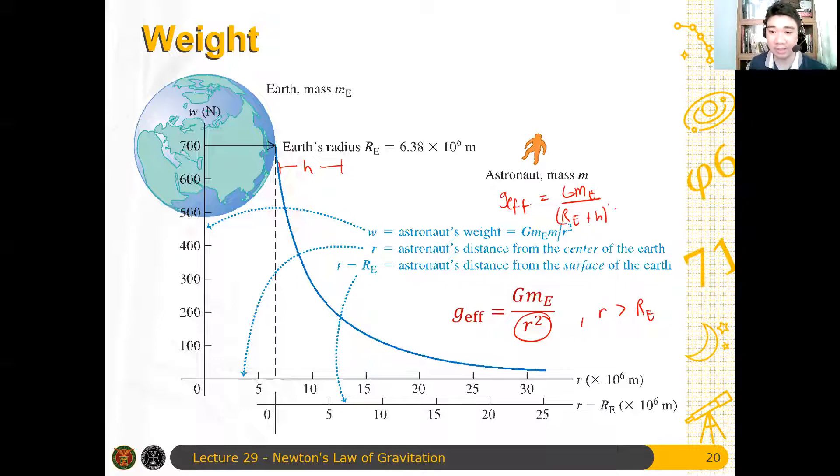then the effective gravitational force is not Gm over h squared, but rather Gm all over the radius of the Earth plus height quantity squared. Kasi nga, dapat from the center ang calculation, not from the surface. Clear ba yun? It's not from the surface, it's from the center. Therefore, meron ka na dapat initial na distance dyan na radius of the Earth r.